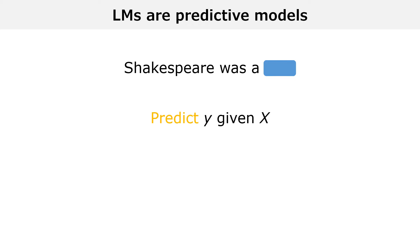This is a prediction problem. The variable to predict, y, is equal to the last word, poet, and the variable x used to make the prediction is the preceding text, Shakespeare was.